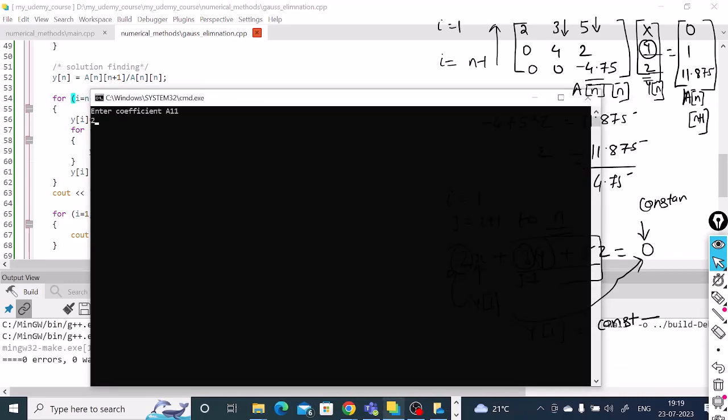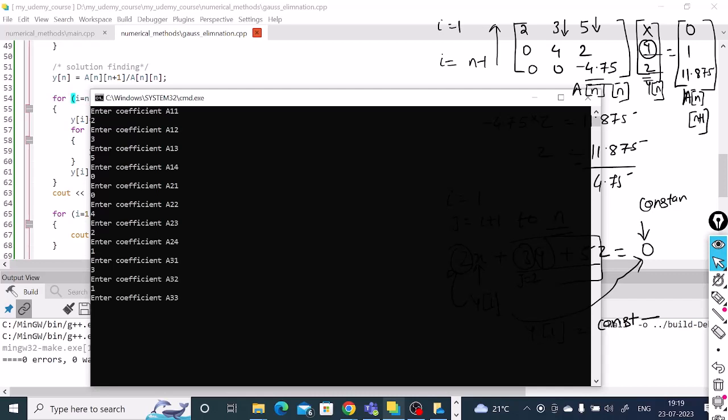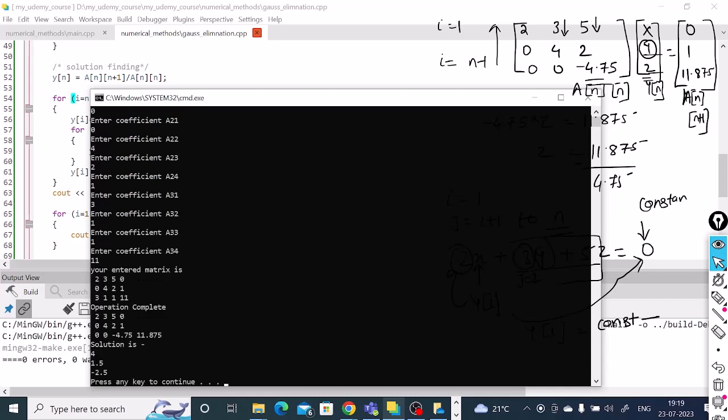The a_1_1 will be 2, 3, 5, 0, 0, 4, 2, 1, 3, 1, 1, 11. And your solution is 4, 1.5, and minus 2.5.